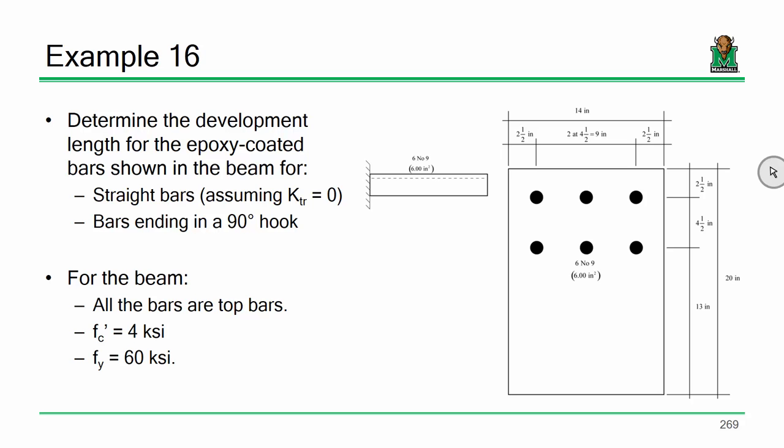This is an example we're going to do to illustrate what's going on with development length. And then we're going to get into our last topic. I'm going to try and go through this example fairly quickly because it's a pretty straightforward task. So, we've got these epoxy-coated bars in this beam. They're six number nines. The beam is 14 inches wide, it's a total of 20 inches deep.